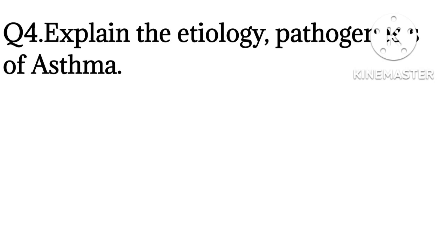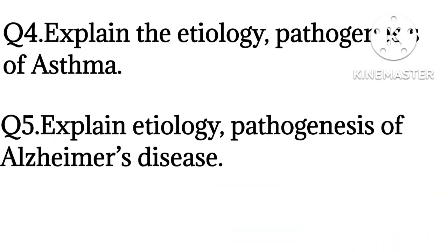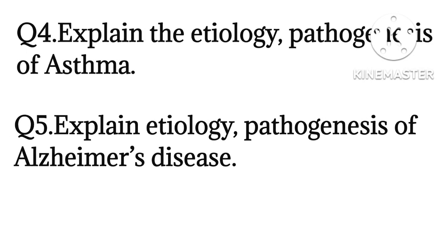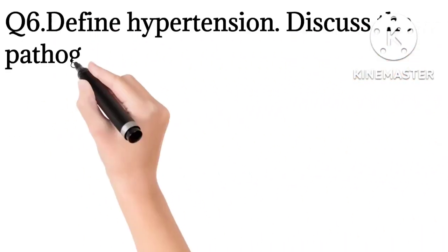For asthma, write intrinsic asthma and extrinsic asthma — these are the types you have to write clearly. Some additional questions will be discussed in the five-marks session in our next part. The fifth question is: explain the etiology and pathogenesis of Alzheimer's disease. It is a brain disorder, a central nervous system disorder, and a very important question.